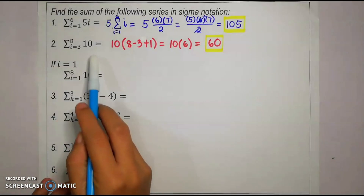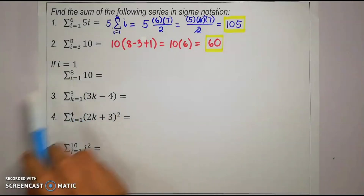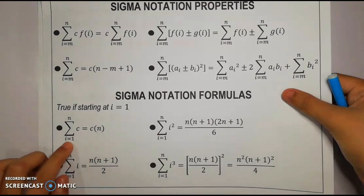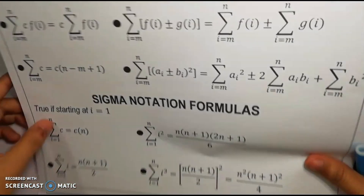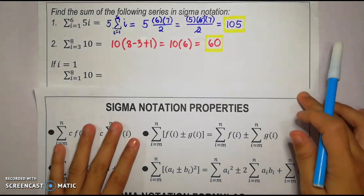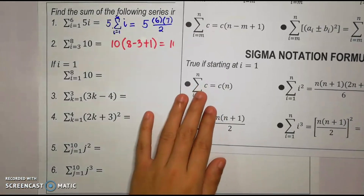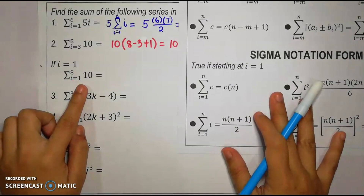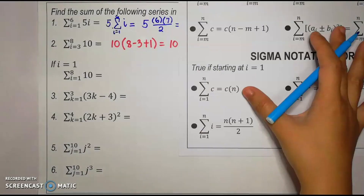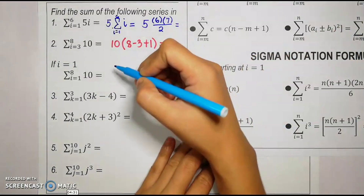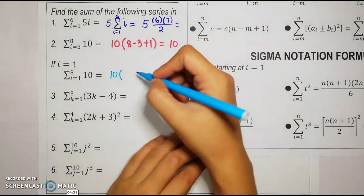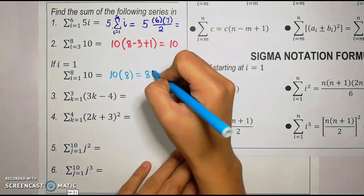However, if i equals 1 with the same upper limit, we use the sigma notation formula: constant times the upper limit. So we have 10 times 8, which gives a sum of 80.